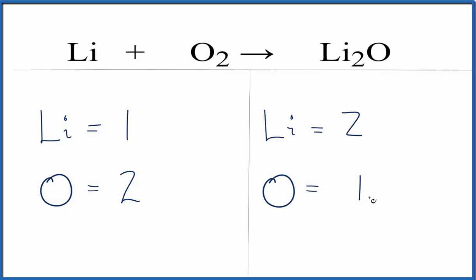Why don't we start by fixing our oxygens here? We could put a coefficient of two in front of the Li2O. We'd have our one oxygen here times the two. That would give us two oxygens, so then the oxygen atoms would be balanced.